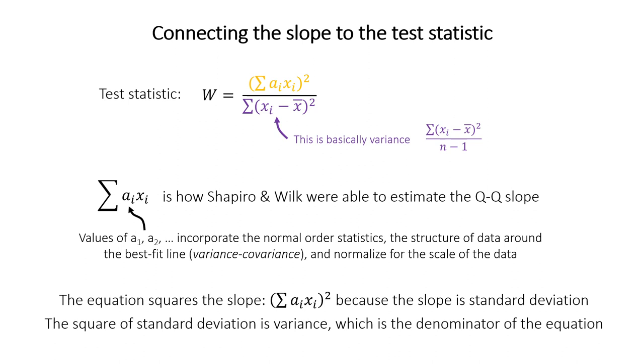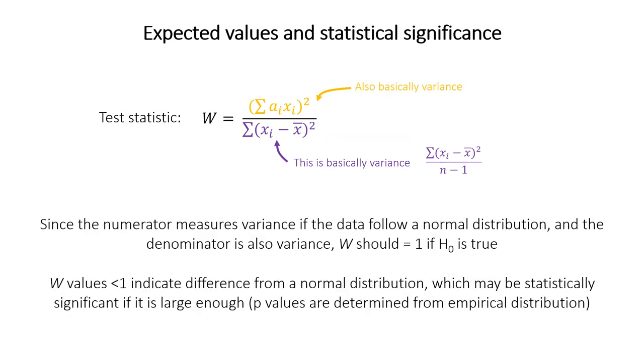And the denominator of our equation is also basically equal to variance. So basically, we have variance divided by variance here. Assuming the data comes from a normal distribution, the two things should be the same. So if our null hypothesis is true, the W statistic should be variance divided by variance essentially. And so it should equal one.